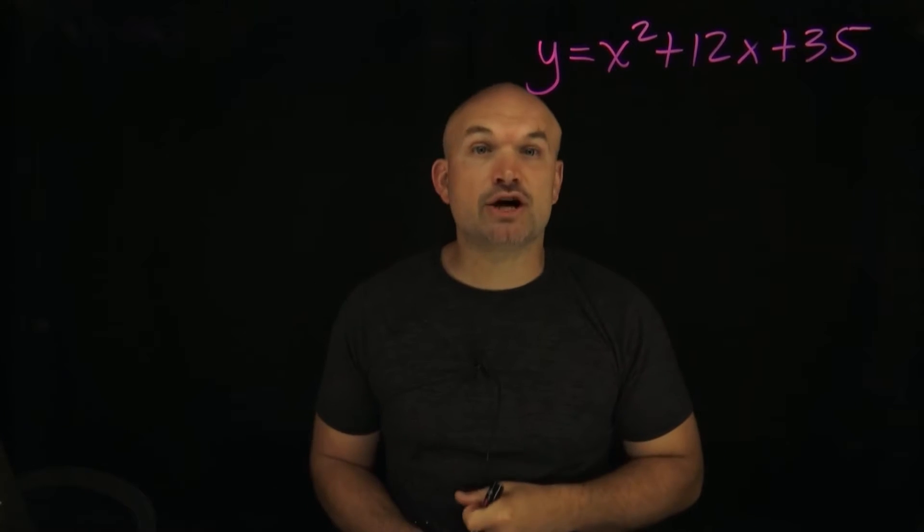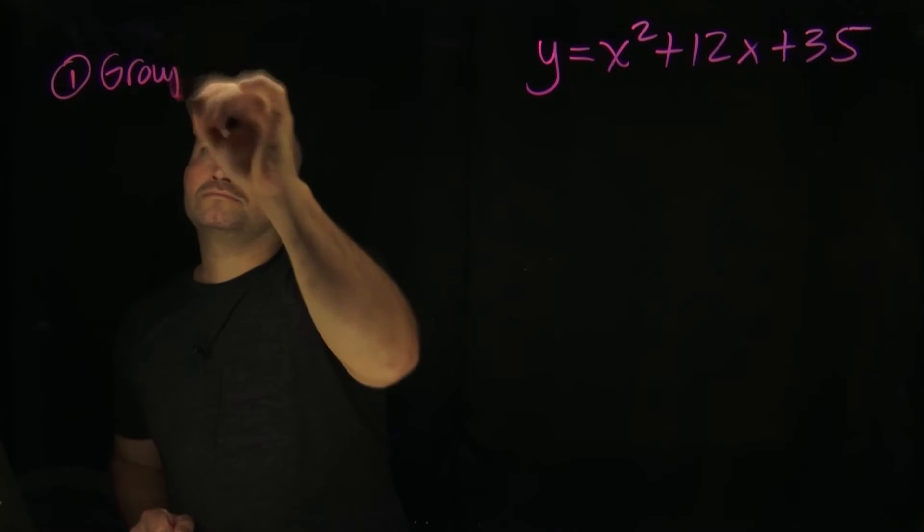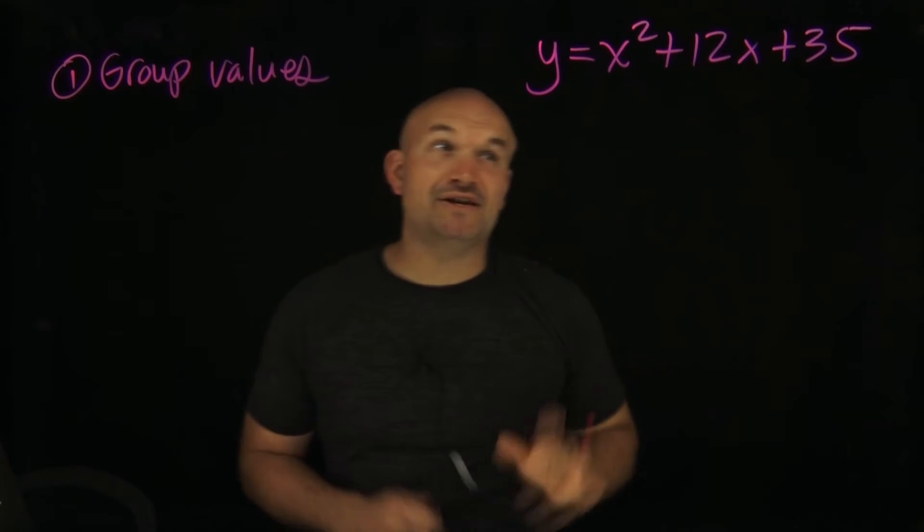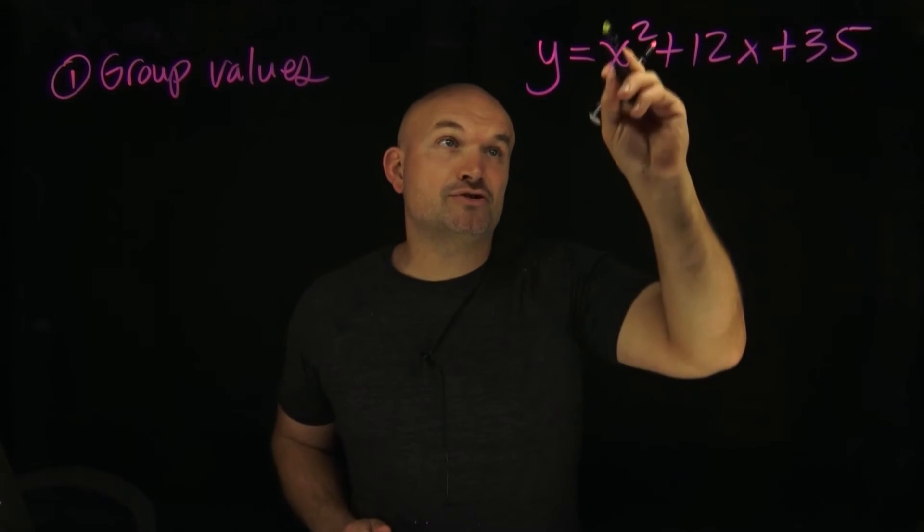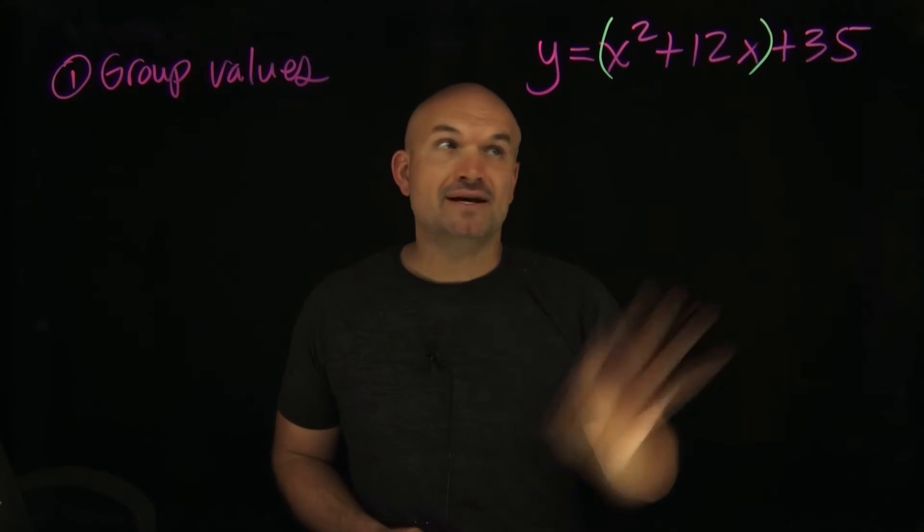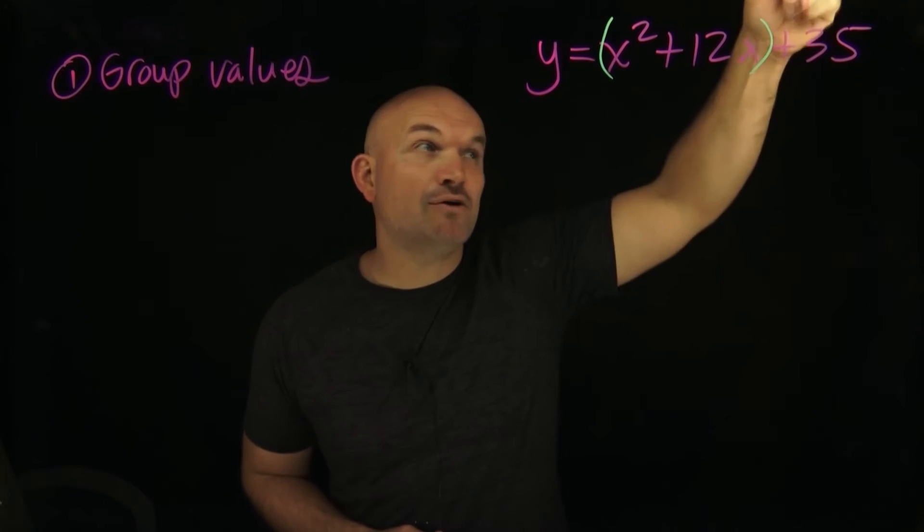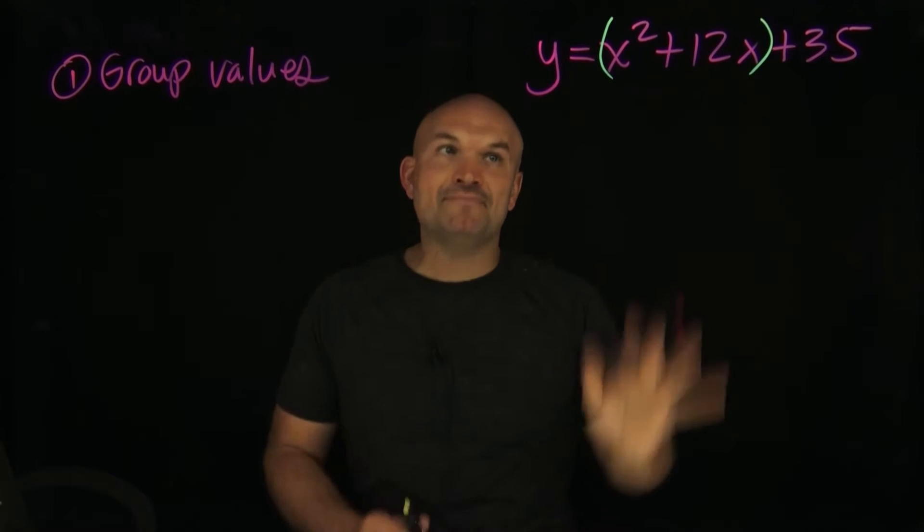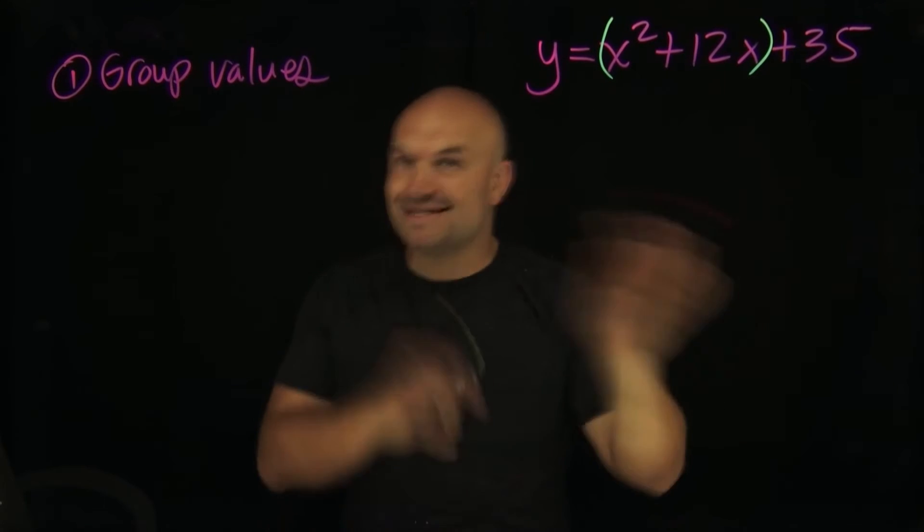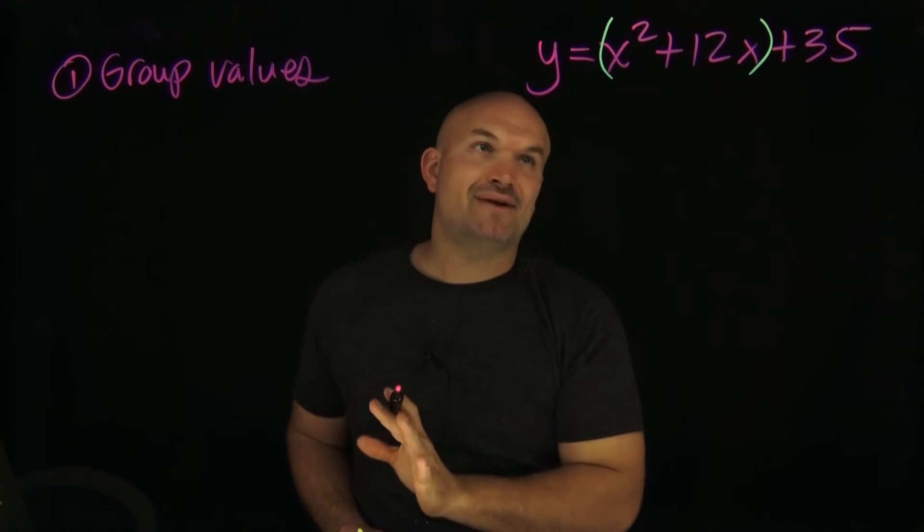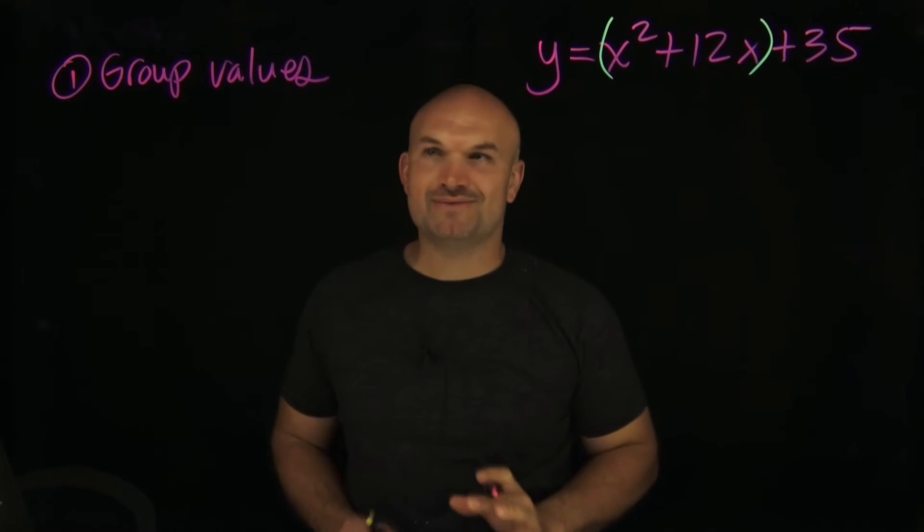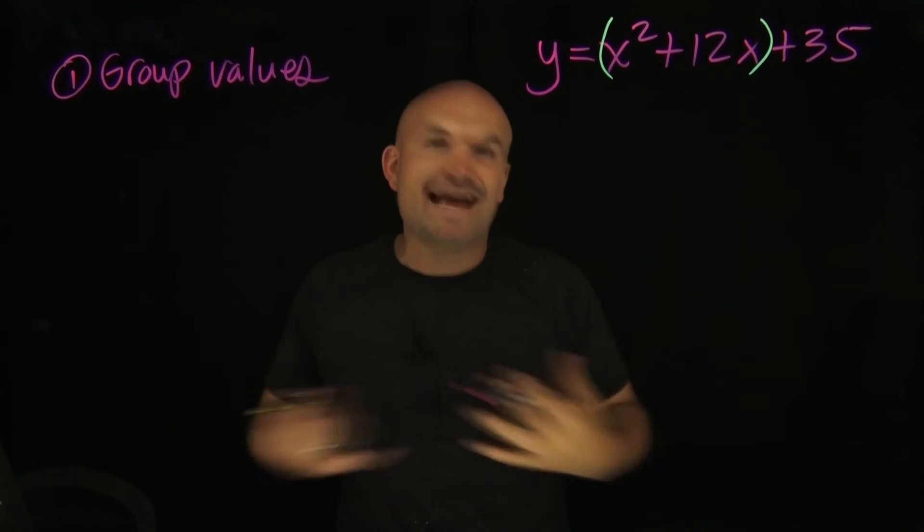The first thing I'm going to want you to do is group your values. Now what I mean by grouping the values, you're simply going to be grouping your x squared and your 12x. We're not going to worry about this 35. So the first step is pretty simple.